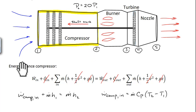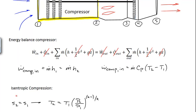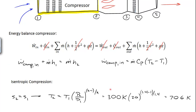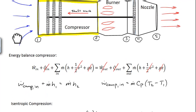Because this is an ideal (isentropic) compressor — adiabatic and reversible — we can use the isentropic relation for an ideal gas: T2 = T1 × (P2/P1)^((K−1)/K). Plugging in the ambient temperature of 300 K, a pressure ratio of 20, and K = 1.4, we find the temperature at the exit of the compressor is a little over 700 K — even before the air has reached the combustion zone.